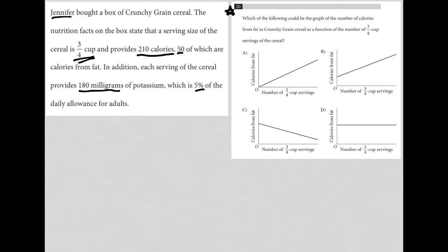Question 20 asks: which of the following could be the graph of the number of calories from fat in Crunchy Grain cereal as a function of the number of three-quarter cup servings of the cereal? Let's remember that every three-quarter cup serving contains 50 calories of fat.